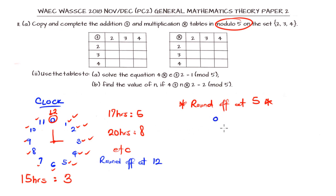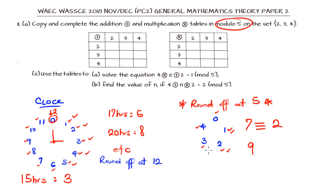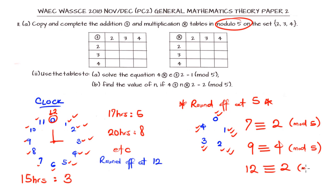In modulo 5, at every point we get to five we round off. So we don't have five at all — we can only have 0, 1, 2, 3, and 4, and that makes a complete circle. For example, 7 will be congruent to 2, 9 will be congruent to 4, and 12 will also be congruent to 2. All these are valid when working in modulo 5.